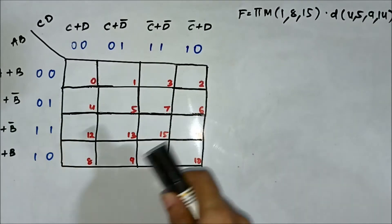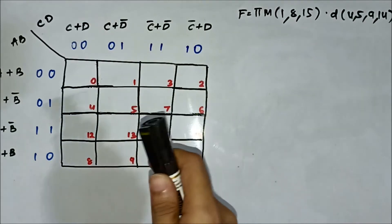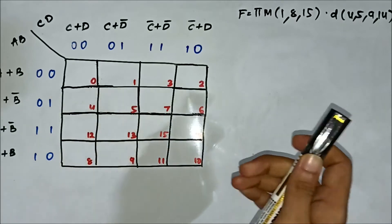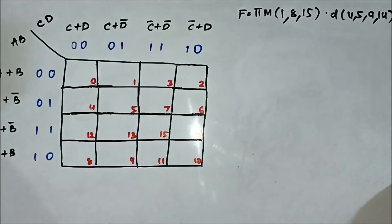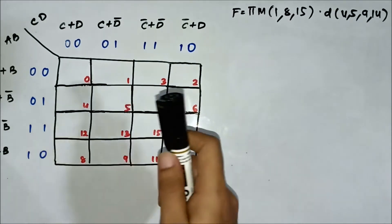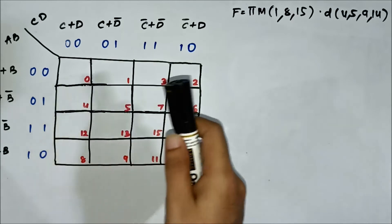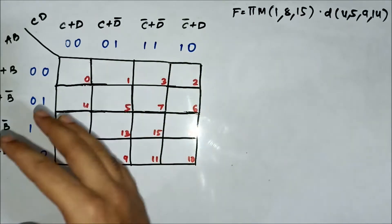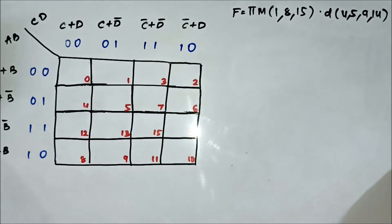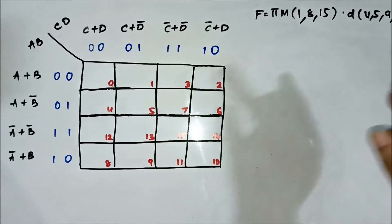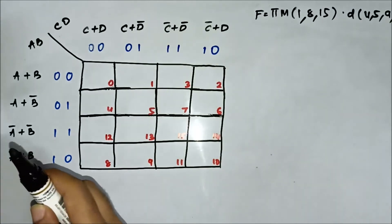Hello friends. Here is another question on POS 4-variable don't care condition K-map. We have a POS expression given in terms of the max term values and the don't care values. We'll map the values, then form the groups, and then identify the common variables to write the simplified boolean expression.